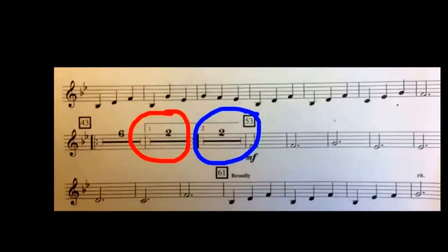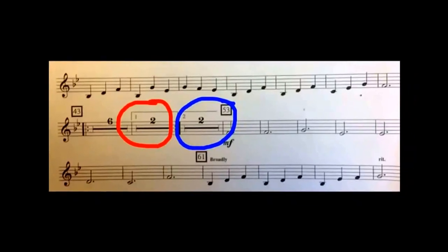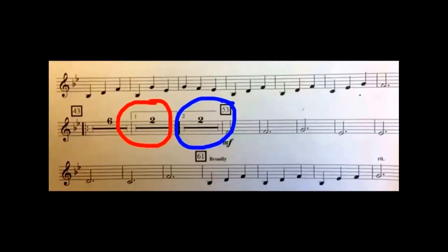Now what do you do when you have measures of rest within your first and second endings? Well, let's take a look. Let's go to measure 43 in the box. First we will count our six measures of rest, and then we'll get to our first ending. We will count the two measures of rest within that first ending, and then we'll take a repeat sign back to measure 43 in the box. Where we will count once again those six measures of rest, and then go ahead to the second ending where we'll count those two measures of rest. And then we'll be at measure 53 in the box.